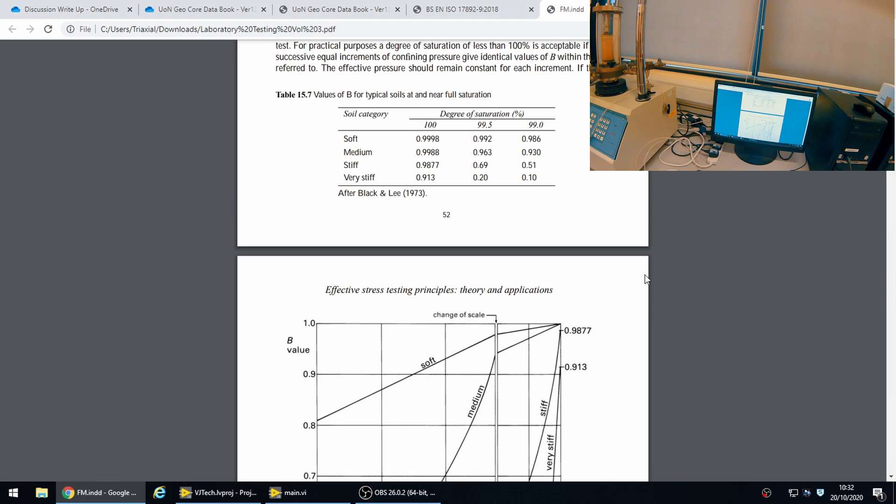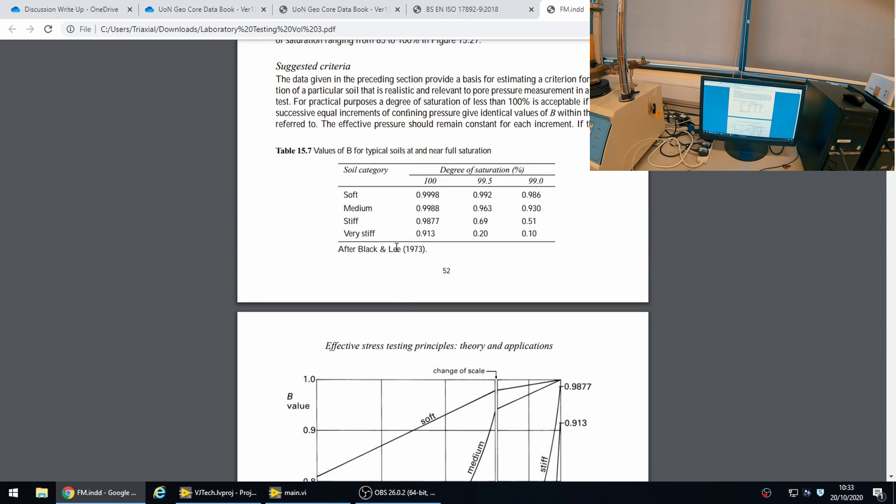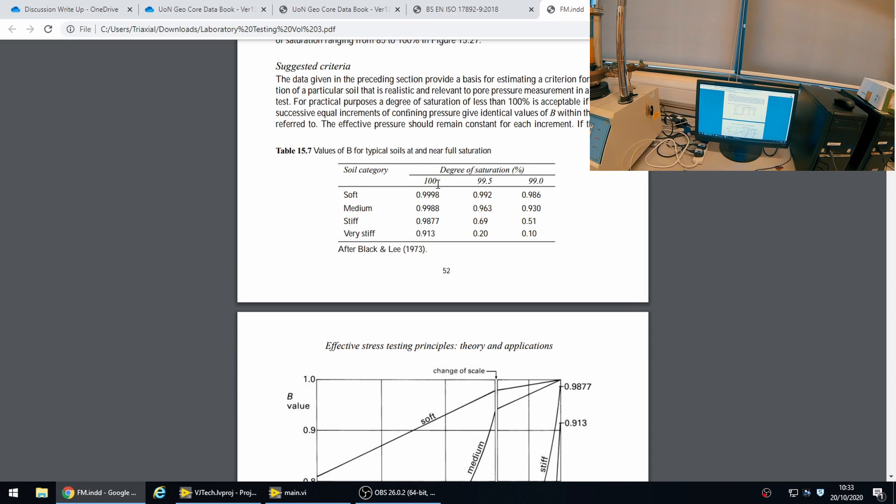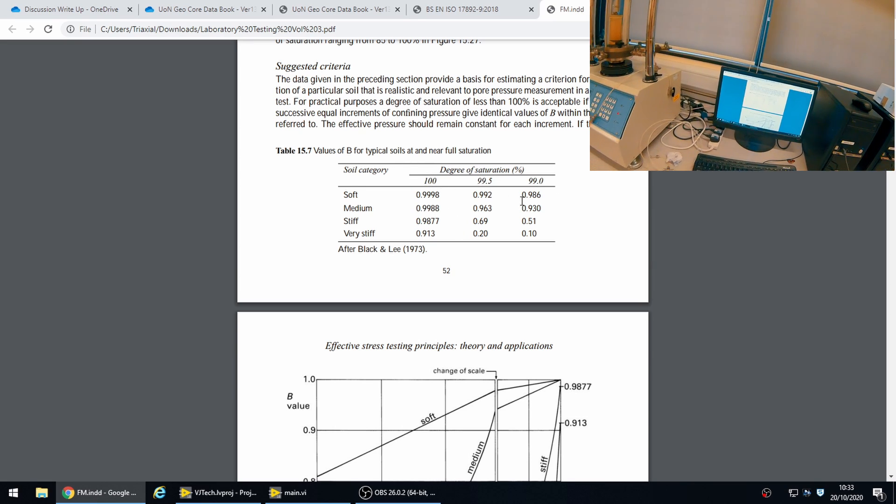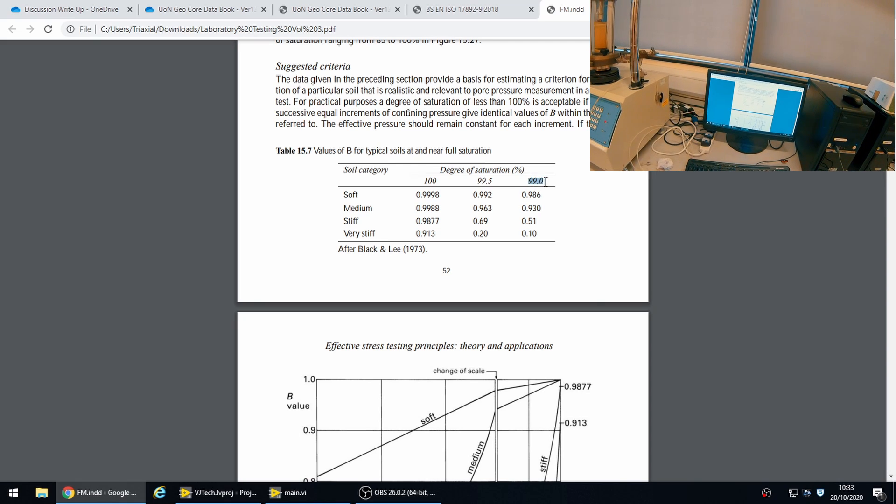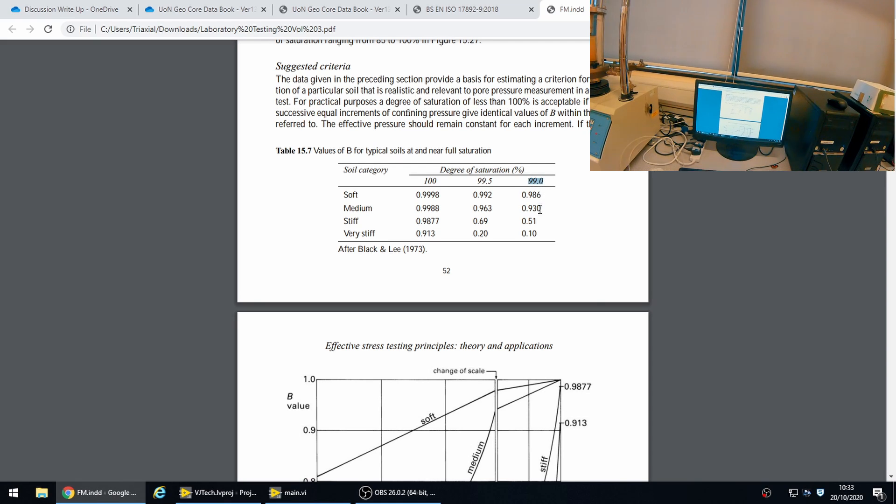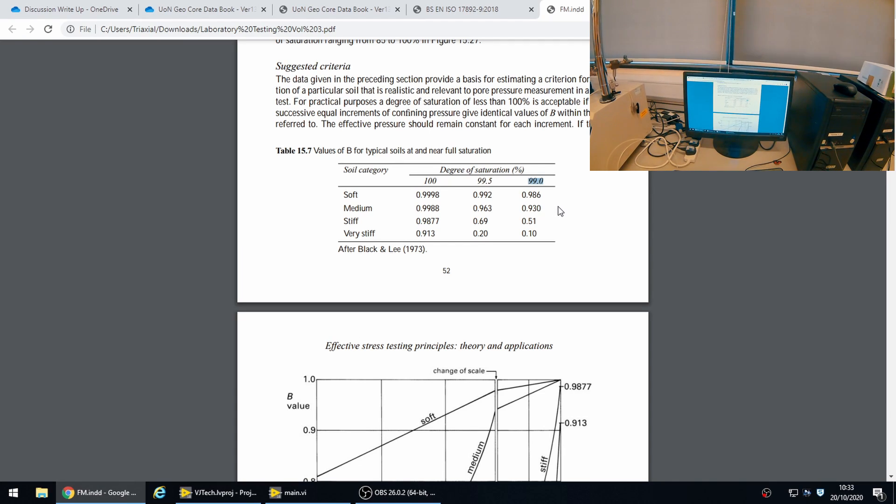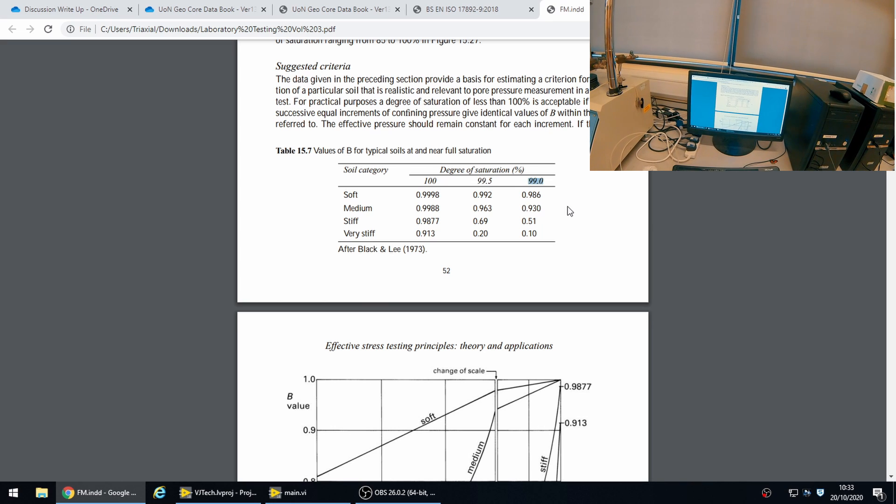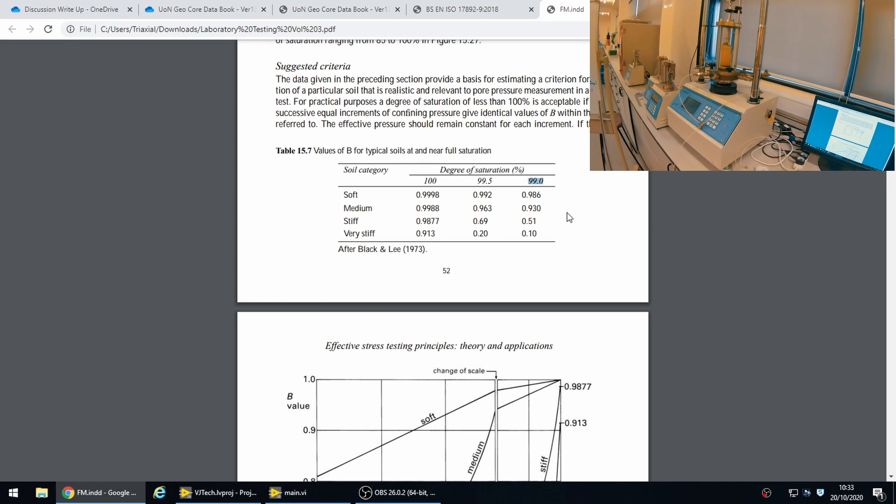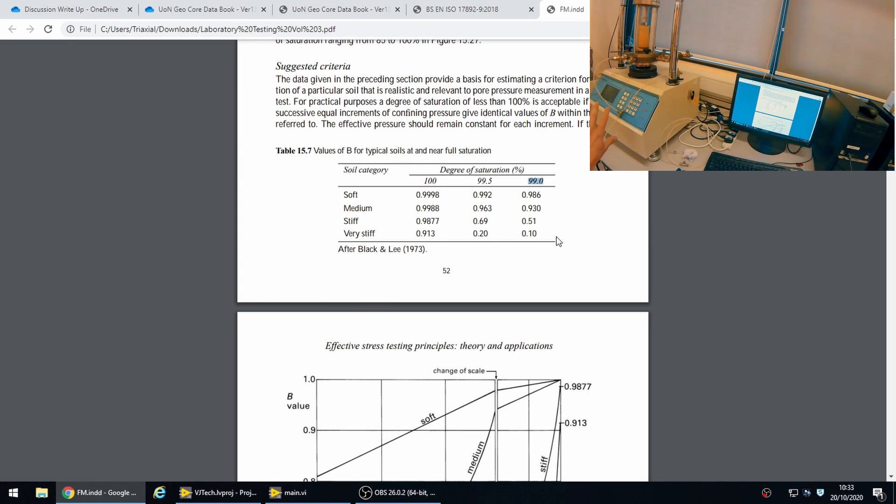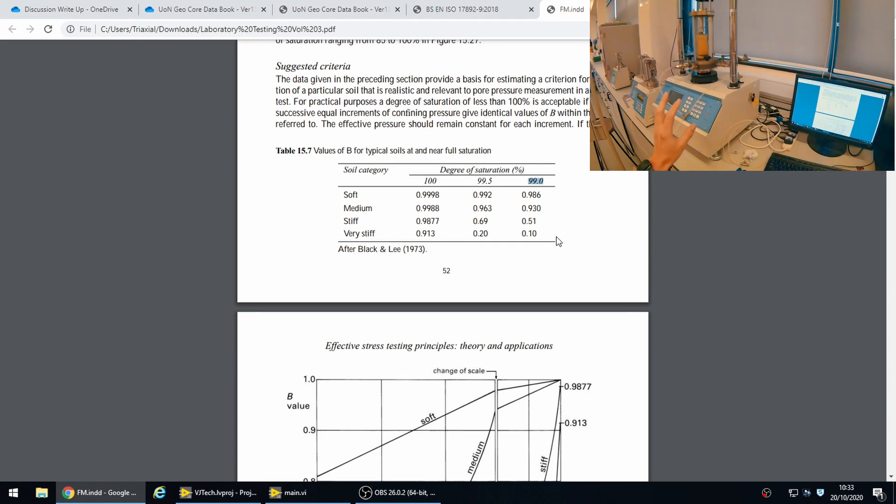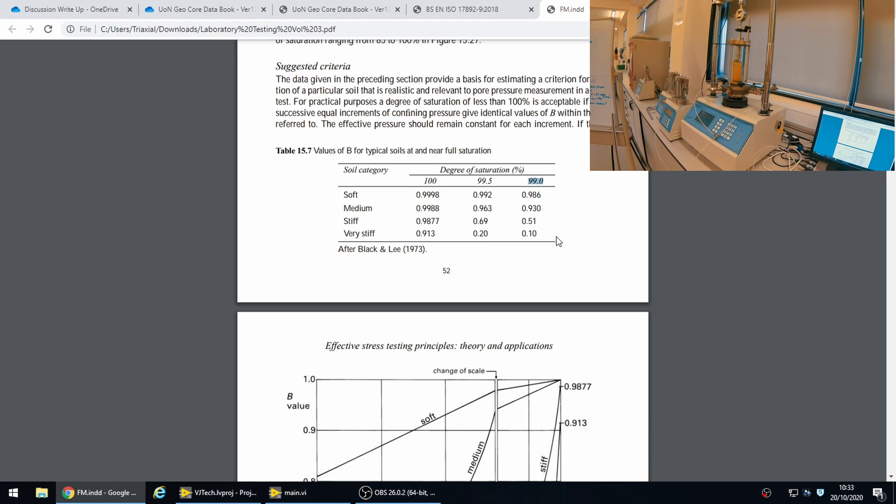We see a table here provided by Black and Lee 1973 that talks about the degree of saturation needed and the different B values you'll get. For a 99% saturated sample, your B value will be 0.93. Now, as I already mentioned, in this test it's unlikely we're really going to get that high. For one, there is obviously some air content within the lines and there might still be some in the soil.